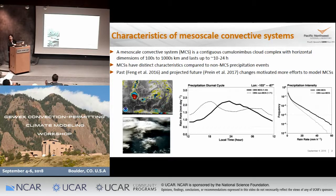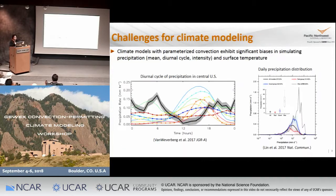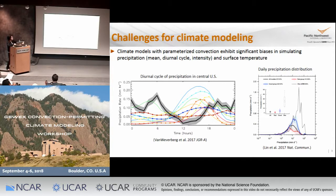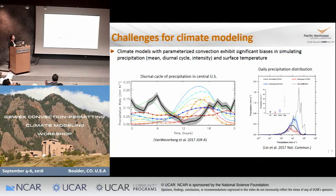So we put in more effort to better simulate this type of convective system. The difficulty is that, as Roy already mentioned, most climate models cannot really simulate MCSs. This is suggested by, for example, looking at the diurnal cycle of precipitation. You can see that the model-simulated timing is almost completely opposite to the observation. Another study also looked at simulated precipitation intensity, and based on CMIP5 models, they cannot capture the intense precipitation typically associated with MCSs.